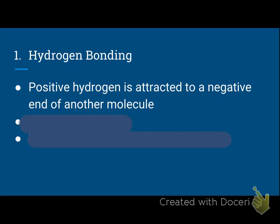Number one is hydrogen bonding — it is the strongest bond we're going to see. This is when we have a positive hydrogen that's attracted to a negative end of another molecule. In a dipole, your positive end always points towards hydrogen, so hydrogen has a slightly positive charge. The negative end of another molecule would be something more electronegative, giving that part of the molecule a slightly negative charge. The slightly positive hydrogen of molecule A is attracted to the slightly negative end of molecule B.